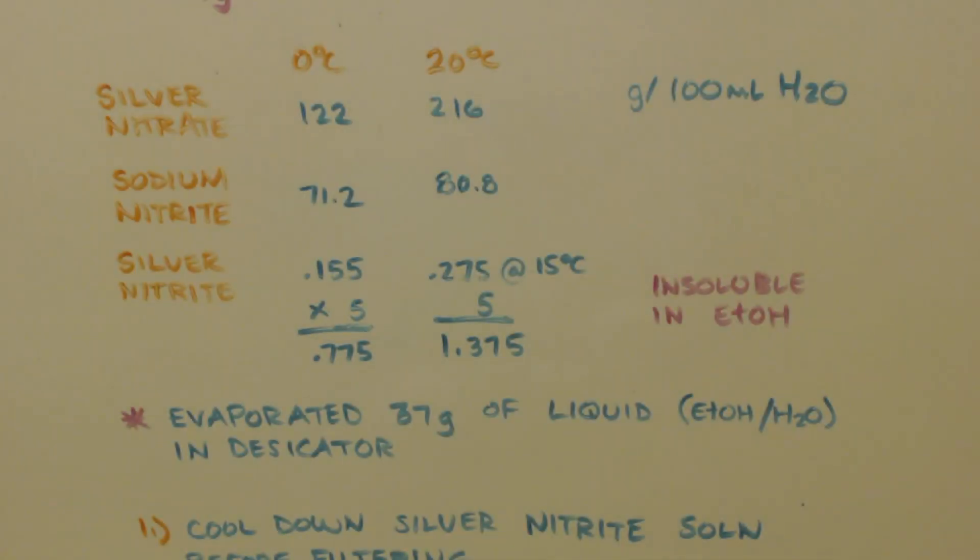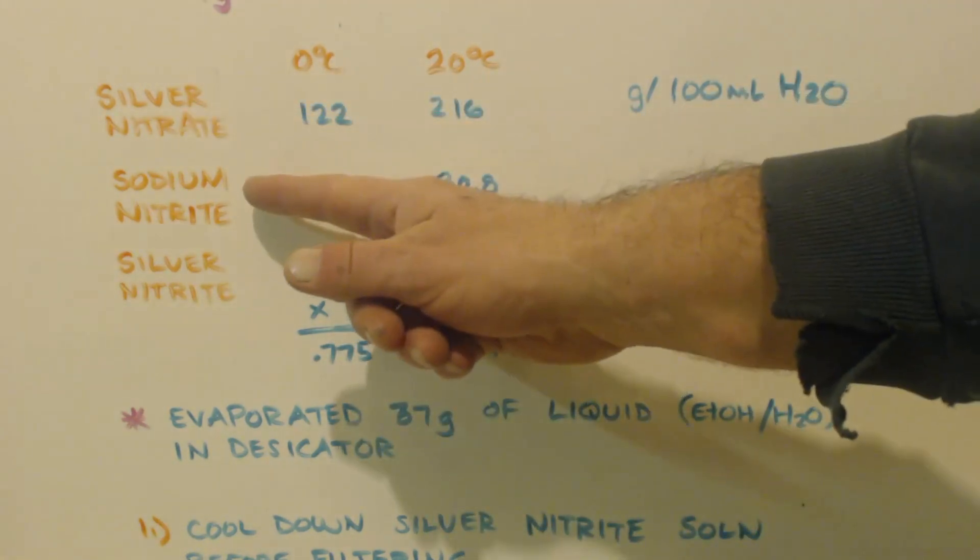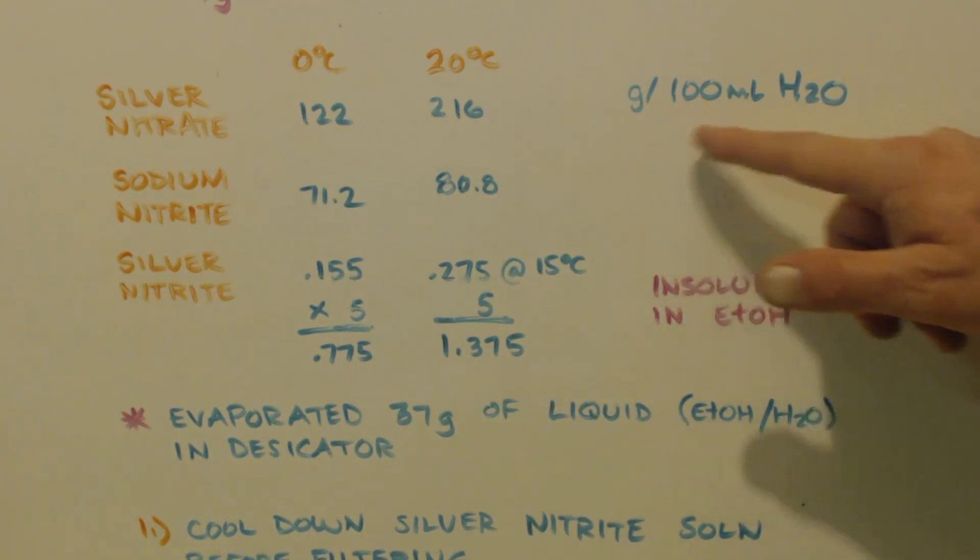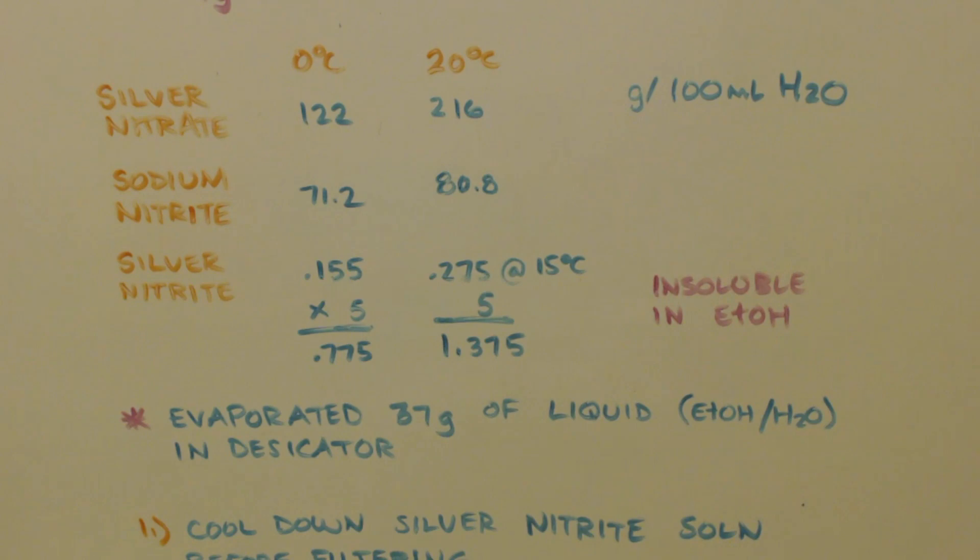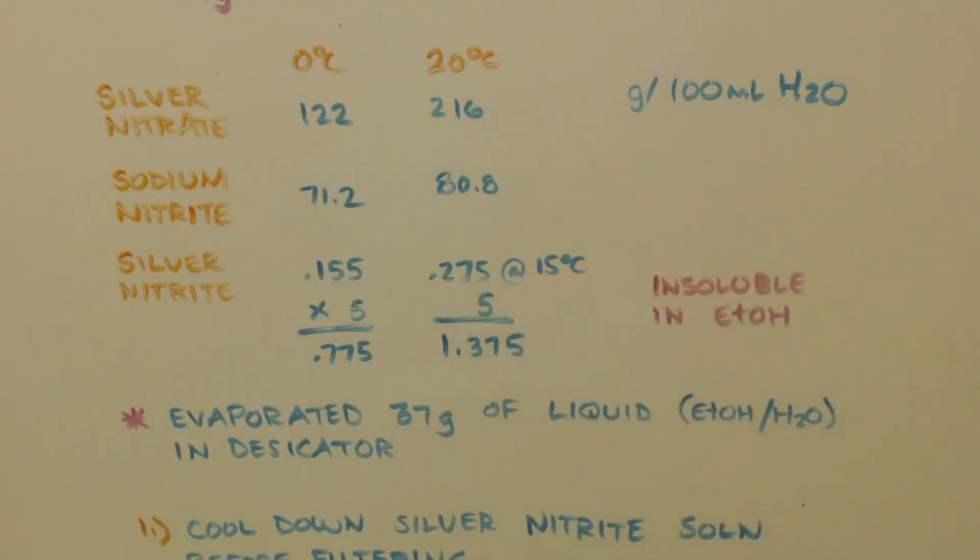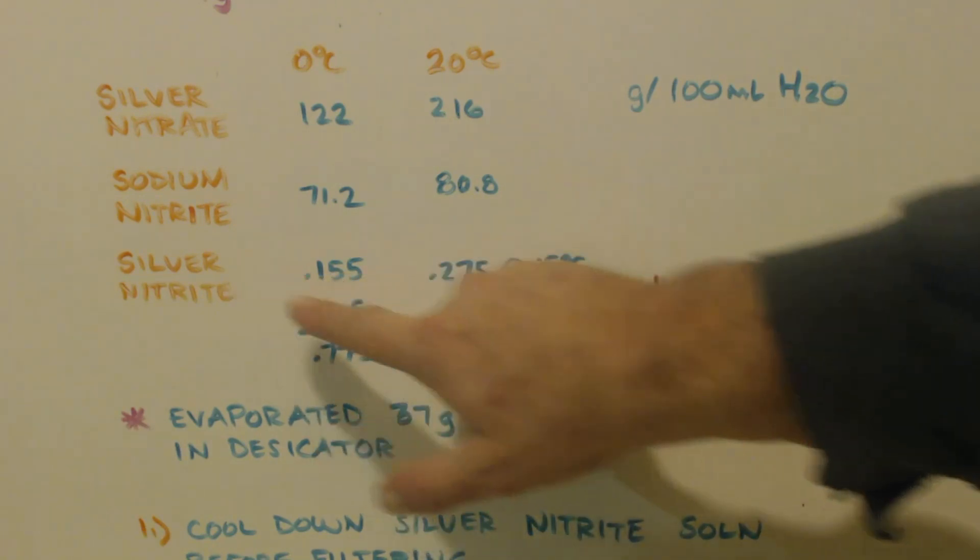All right, now after we mixed them both together, right, we had the silver nitrite precipitate out. And we used water to wash the precip, right? We filtered it, got the liquid out of there, and then we put some water in there, stirred it up, and let it dissolve some of the impurities out. Here is silver nitrate, sodium nitrite, and our product silver nitrite. 0 degrees and 20 degrees Celsius. These are the solubilities in grams per 100 milliliters of water. This one I couldn't find except at 15, so that's at 15. You can see you barely have any solubility of the silver nitrite.